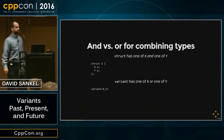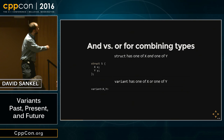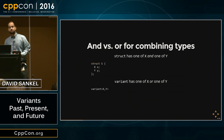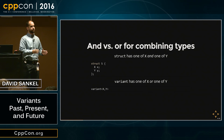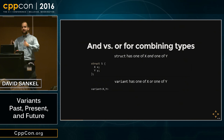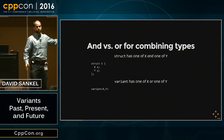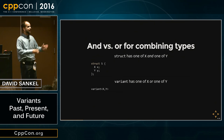So what is variant? The way I like to think about it is AND versus OR. If you have a struct with two members X and Y, it has an X member AND a Y member. If you have a variant with an X and a Y, it has an X OR a Y — it's either going to have an X or a Y, never both. So it's AND versus OR.